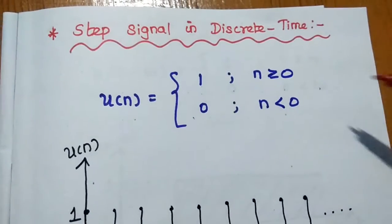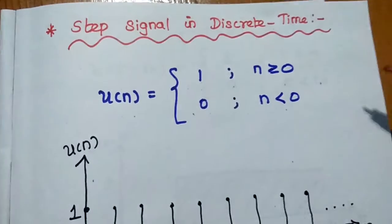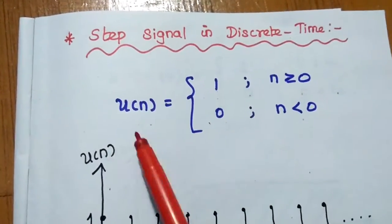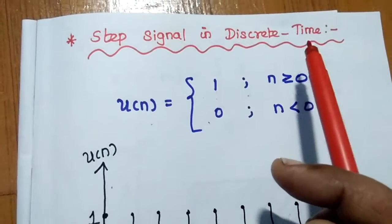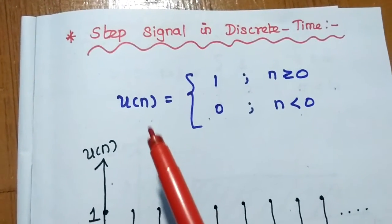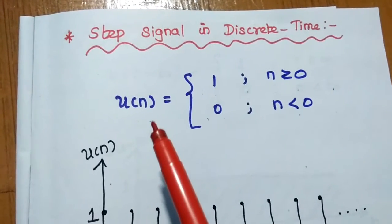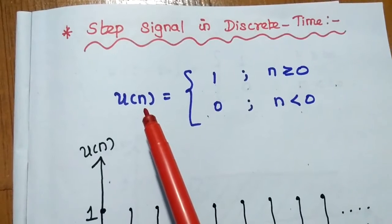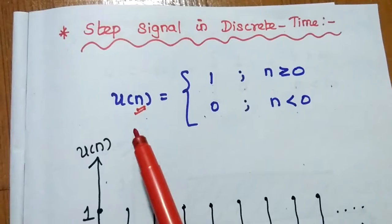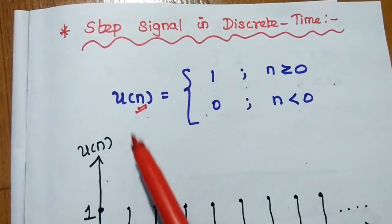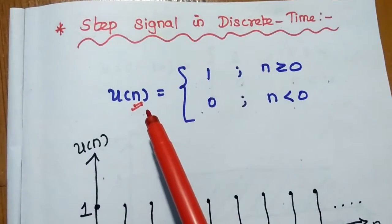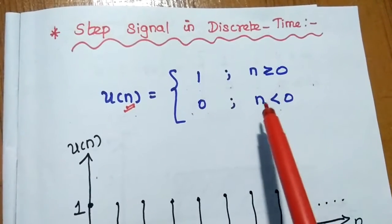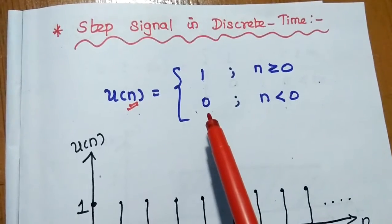Likewise, we can define the step signal in terms of discrete time. We have already discussed continuous time and discrete time in previous classes. Here N represents discrete time — that means it represents a sample of time; it is not continuous. The step signal in the discrete time domain is represented as U(N). U(N) equals 1 whenever N is greater than or equal to 0, and 0 when N is less than 0.